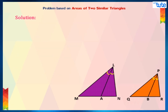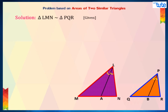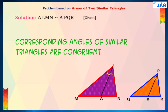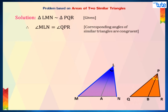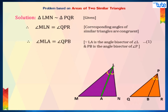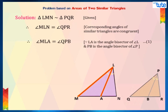To prove this, first we'll consider what is given to us. We have been given that triangle LMN is similar to triangle PQR. Now since corresponding angles of two similar triangles are congruent, we can say that angle MLN is equal to angle QPR.